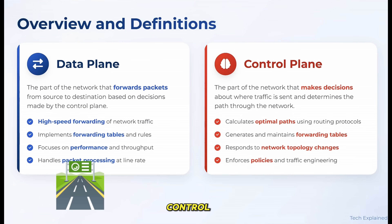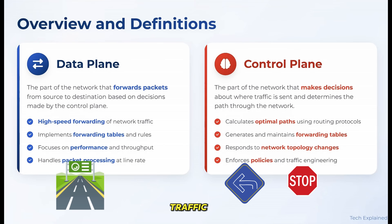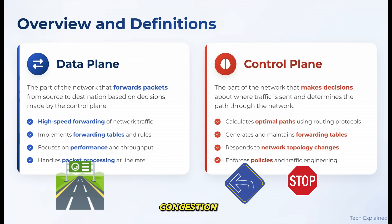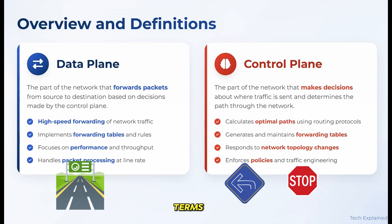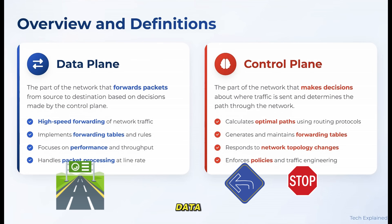The control plane, on the other hand, is like the traffic management system — the traffic lights, signs, and traffic controllers that decide which routes vehicles should take, how to handle congestion, and what to do when there's an accident. In networking terms, the data plane is responsible for actually forwarding packets, moving data from source to destination. It's the doing part of the network.